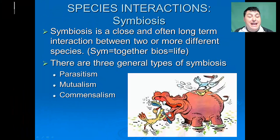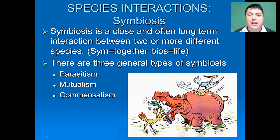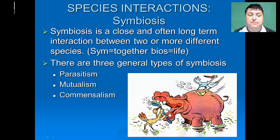The last relationship we're going to look at today is symbiosis. Symbiosis is a close and often long-term interaction between two or more different species. If we break the word symbiosis apart, we would see that 'sym' means together and 'bios' means life — so it's life together. There are three general types of symbiosis: parasitism, mutualism, and commensalism.